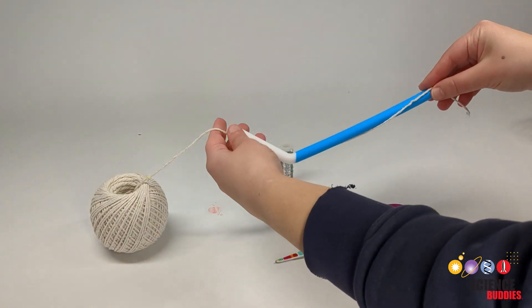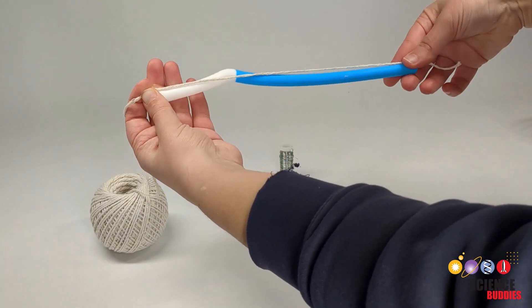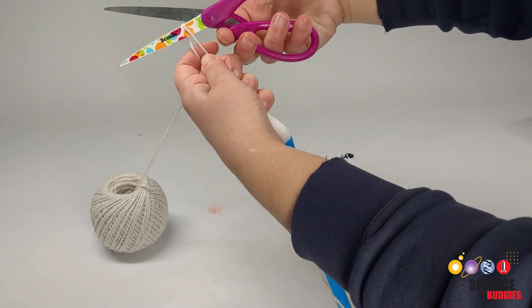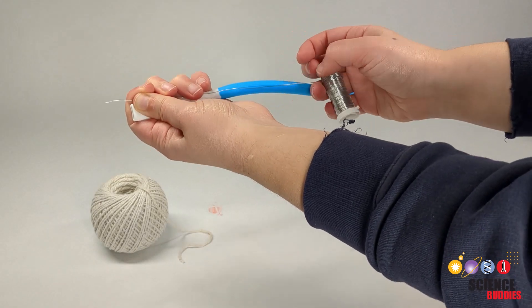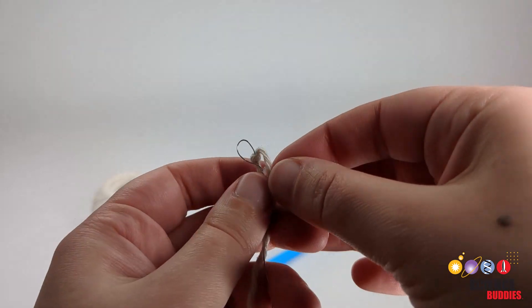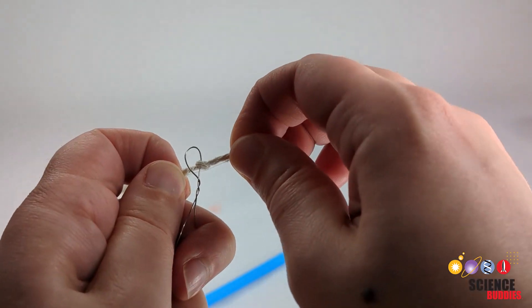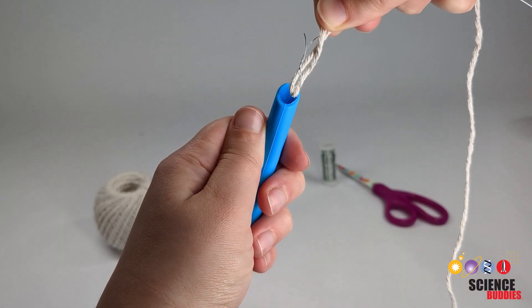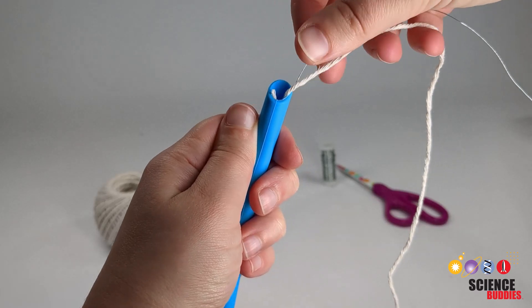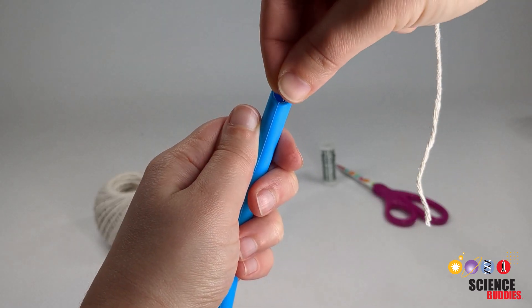First, cut a piece of cotton string so that it overhangs the straw on each side. Then, cut a piece of craft wire with the same length as the cotton string. Tie the end of the cotton string to the end of the craft wire. Then, feed both of them through the straw, leaving the end of the cotton overhanging on the opposite end.